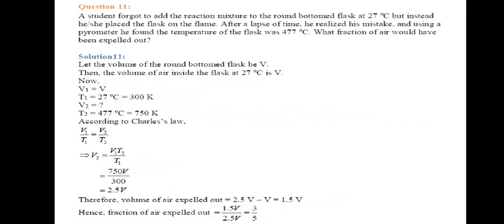A student forgot to add the reaction mixture to the round bottom flask at 27 degrees centigrade but instead he placed the flask on the flame. After lapse of time he realized the mistake and using a pyrometer found the temperature of the flask was 477 degrees centigrade. What fraction of air would have been expelled out?